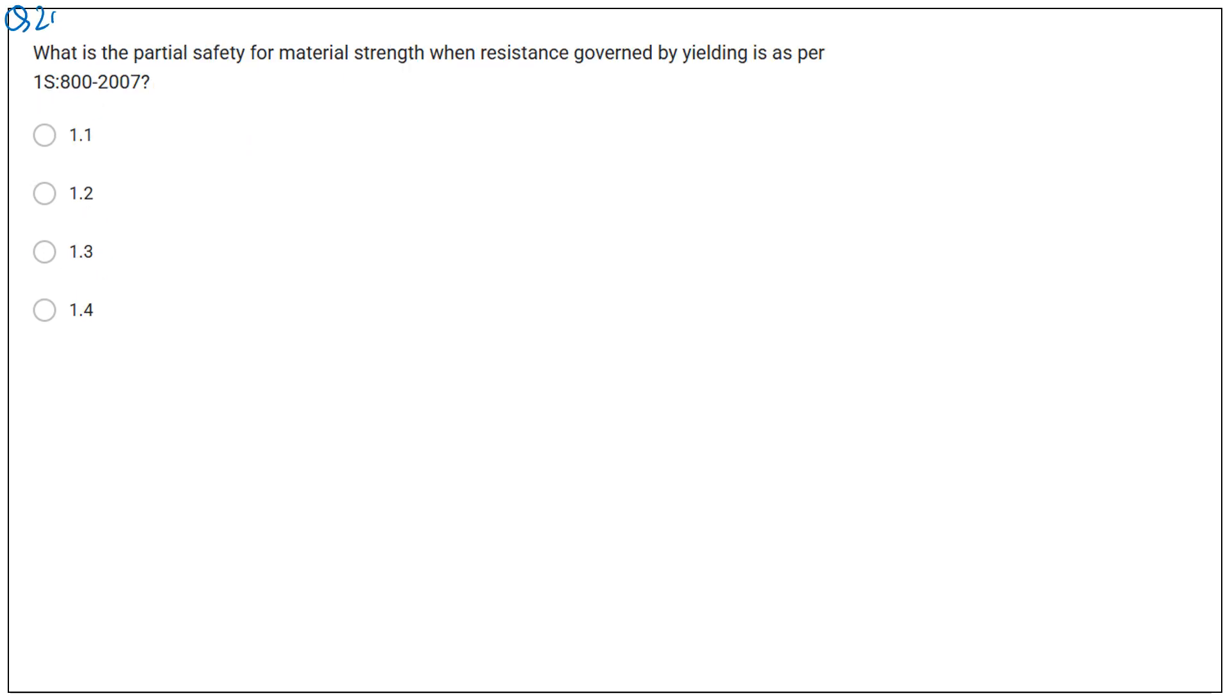Next question. And last question. 20. What is the partial safety factor for material when resistance governed by yielding as per IS 800-2007? There is one chart to remember the partial safety factor. So there is one trick to remember this chart. So first, first in the column, Y, B, and U. Yielding, buckling, and ultimate stress. Yielding, resistance to yielding, then buckling, and then ultimate stress. And next is connection. There are four parameters in the first column. First is Y, B, U, and C. Yielding, buckling, ultimate, and connection.